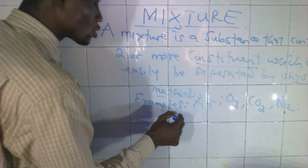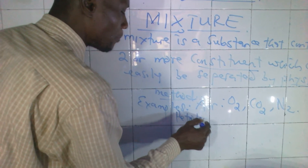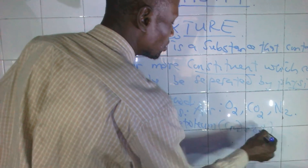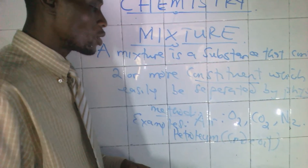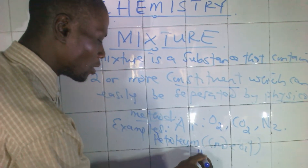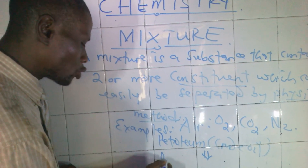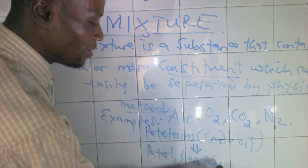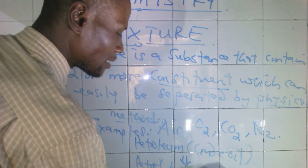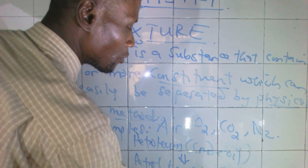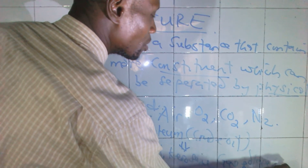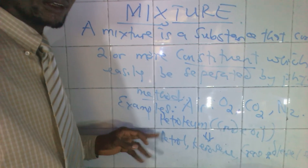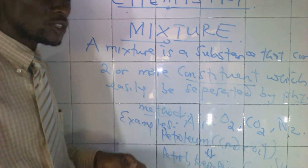Another example of a mixture is petroleum, or crude oil. Crude oil is another example of a mixture. Why? Because crude oil contains petrol, kerosene, natural gas, and diesel. All these are inside petroleum, that's why petroleum is an example of a mixture.